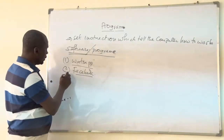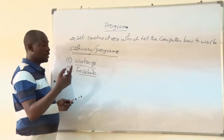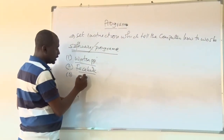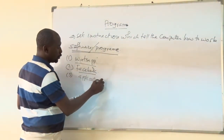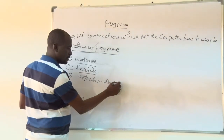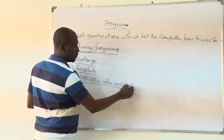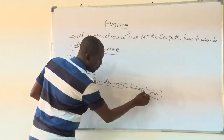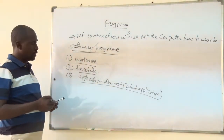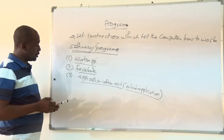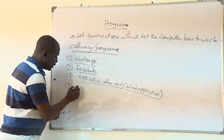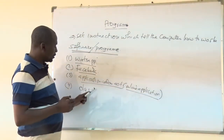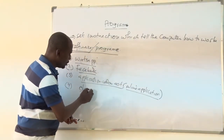Take another example: when you are applying to come to this university or any university, you use an online application system like application.udom.ac.tz. Those online applications are also programs or software. Number four, all of you here applying for a loan — we have the online loan application system, which is another software or program.